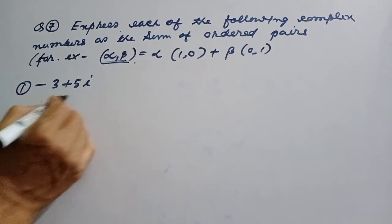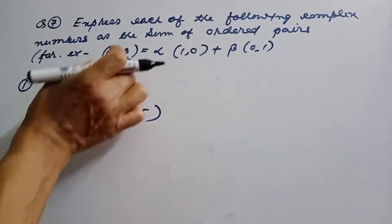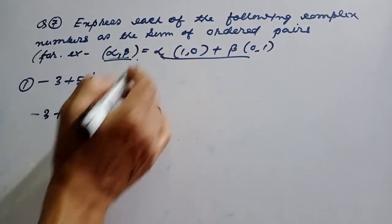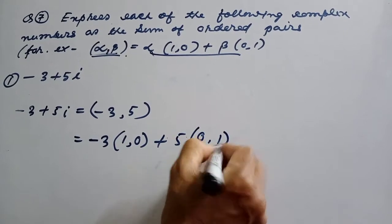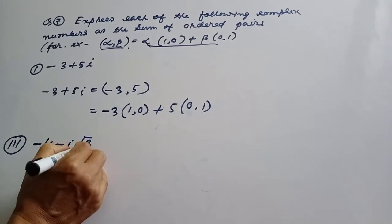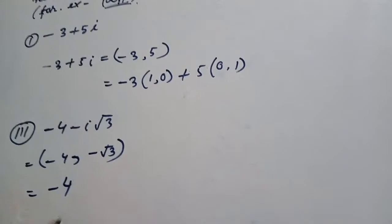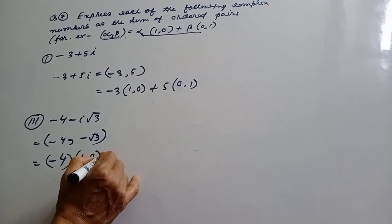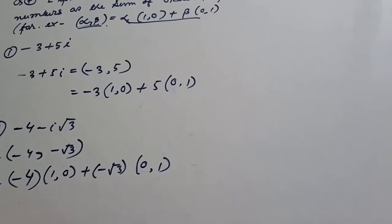I will give you 2 plus 5i, minus 3.5 plus beta, minus 3 alpha plus beta, minus alpha type. Number three: present 1 minus i root 3, minus 4, minus root 3, minus 4, with the ordered pair notation — one comma zero minus three, minus five is zero comma one. So that's it.